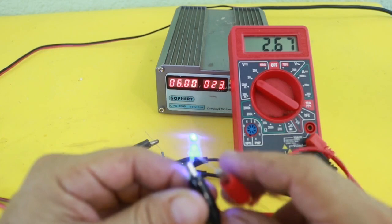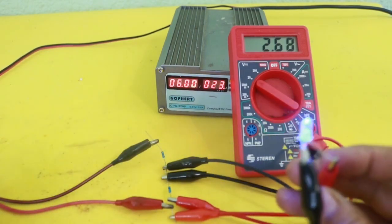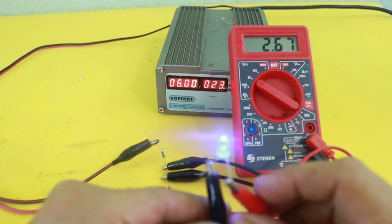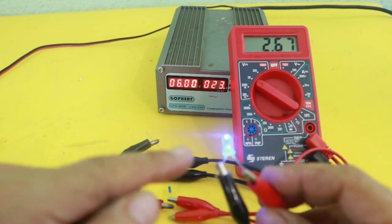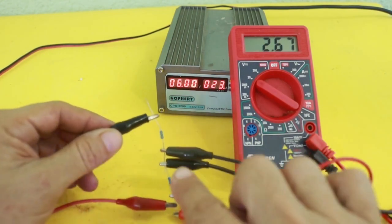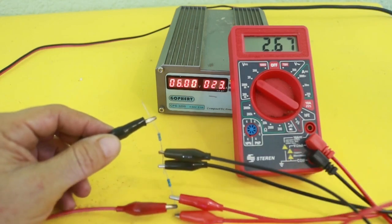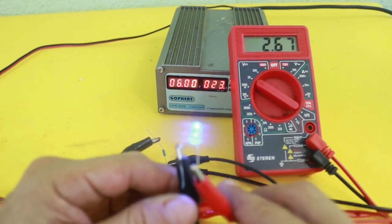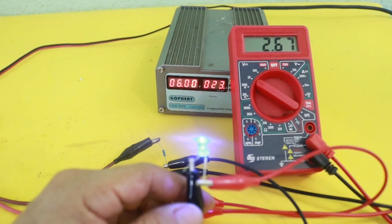And this is normal to happen because we are adding a load to the circuit. The load has a resistance and the value of the voltage divider changes. Therefore, my voltage also changes.